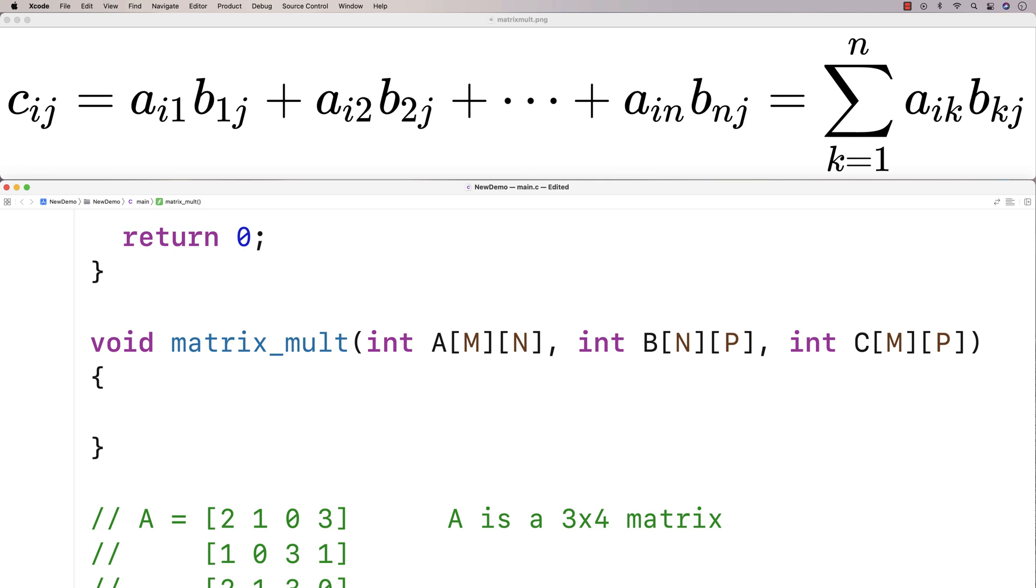So the first thing we're going to do is have a loop nested inside a loop. And what those loops are going to do is go over all of the indexes of C. So we want to go over every row index of C and every column index of C.